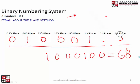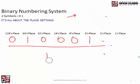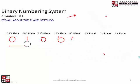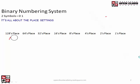Pretty easy process. Let's keep on going. Let's do a couple more so we can see how this all works. Let's do another one — how about 57.